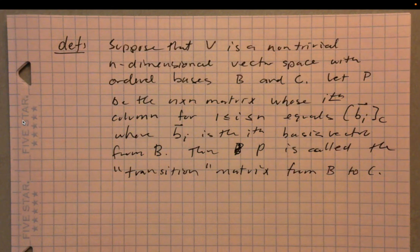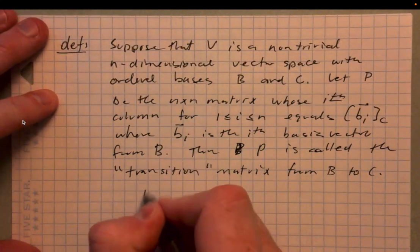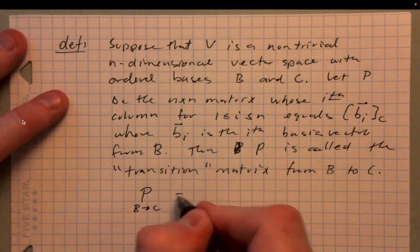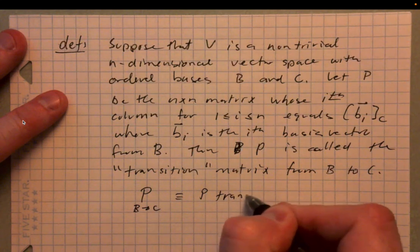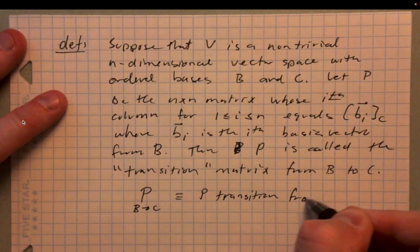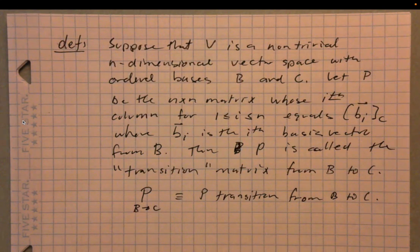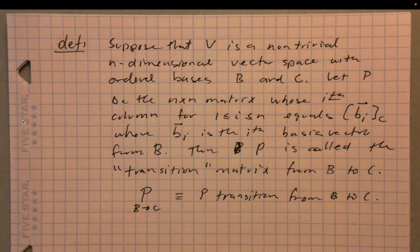P is called the transition matrix from B to C. Some notation that is sometimes used would be P from B to C — notation I've seen people use before which I think is convenient. Frequently we'll just call P the transition matrix from B to C, knowing that that means a coordinatization — that's the context here.